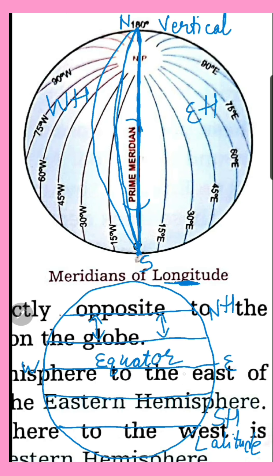Longitude lines are all of equal length. But latitude lines decrease in length as they approach the poles — whether South Pole or North Pole — until they become just a single point at the pole. Lines in the upper portion of latitude are denoted by N, lower by S; for longitude, east direction is denoted by E and west by W.